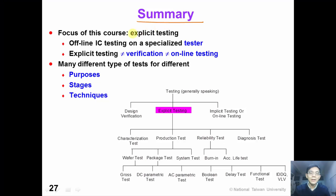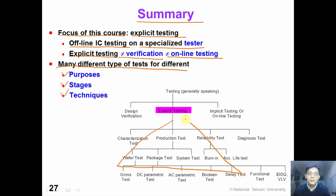In summary, in this video we have introduced the focus of this course, which is explicit testing. Explicit testing means that we test the IC offline on a specialized tester. Explicit testing is not the same as design verification and it's not the same as online testing. We have shown many different types of testing for different purposes, stages, and techniques. The reason why we have so many different tests is because we have many different problems. We don't have to memorize all the names — you only need to know why we need each test. The important concepts will be reviewed again in other videos. Thank you for watching.